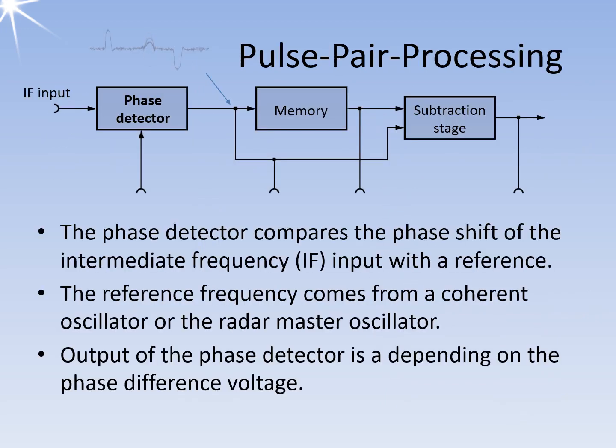Pulse pair processing involves processing two or more pulse periods to display moving targets on an analog screen while suppressing fixed clutter signals. This process is known as moving target indication, MTI.